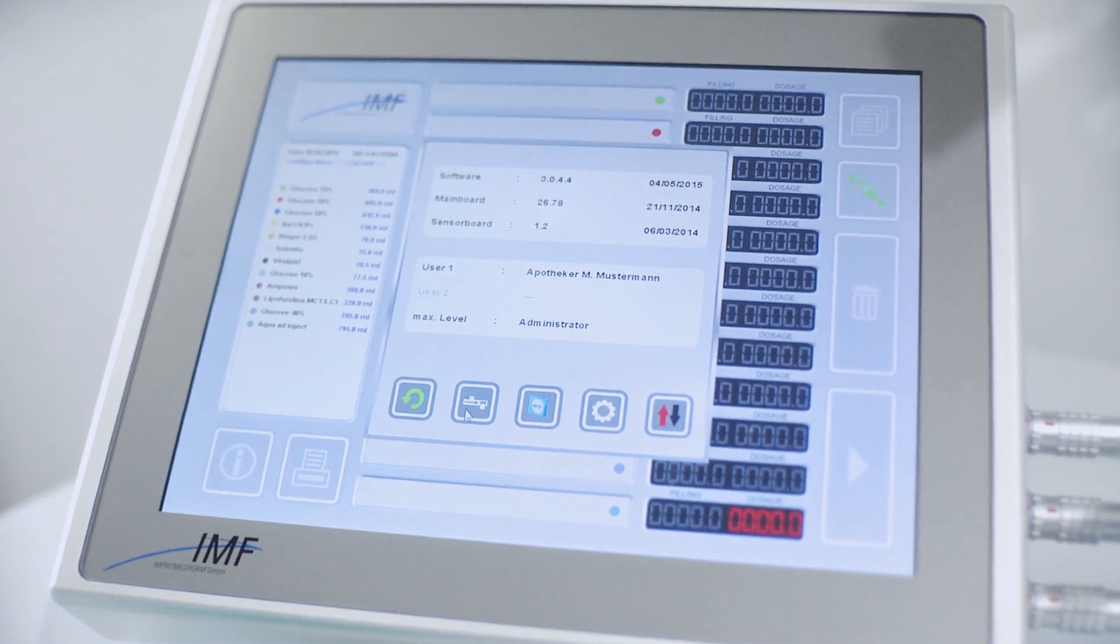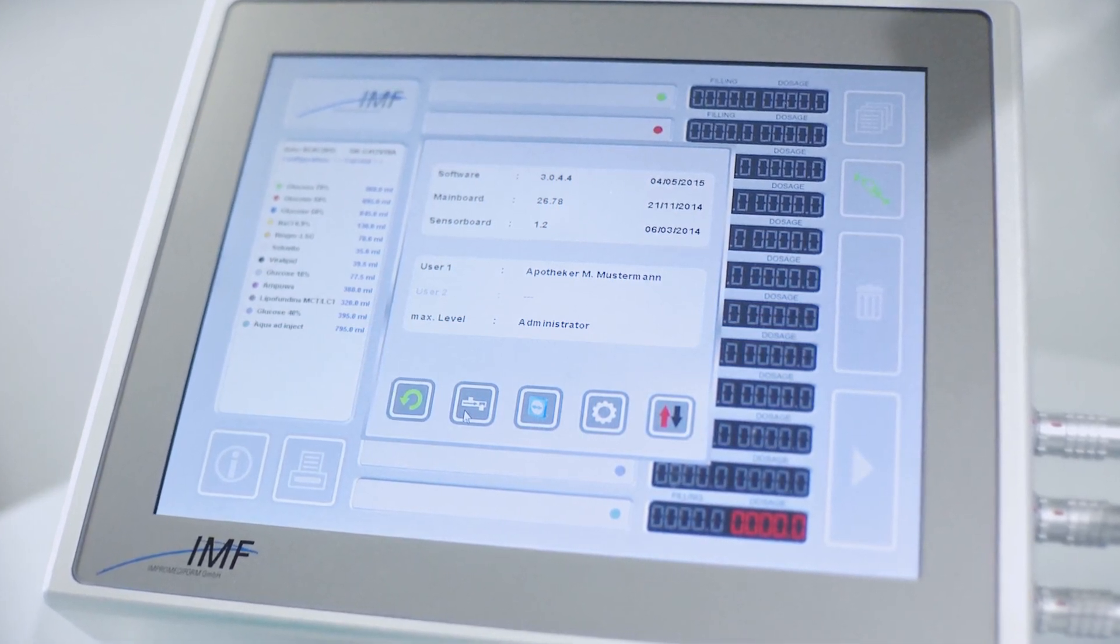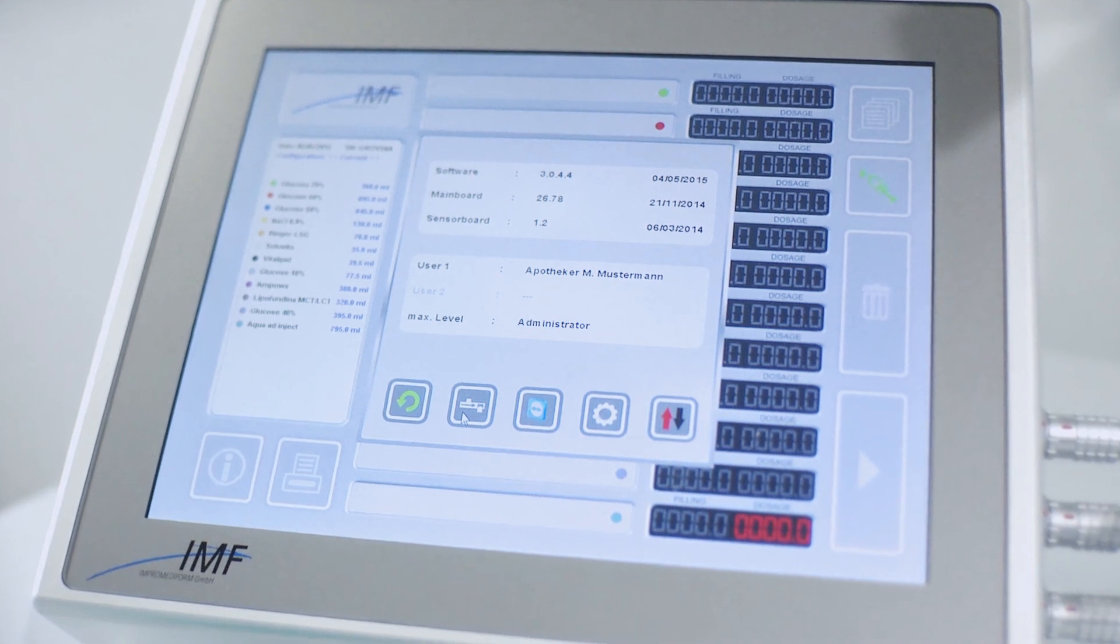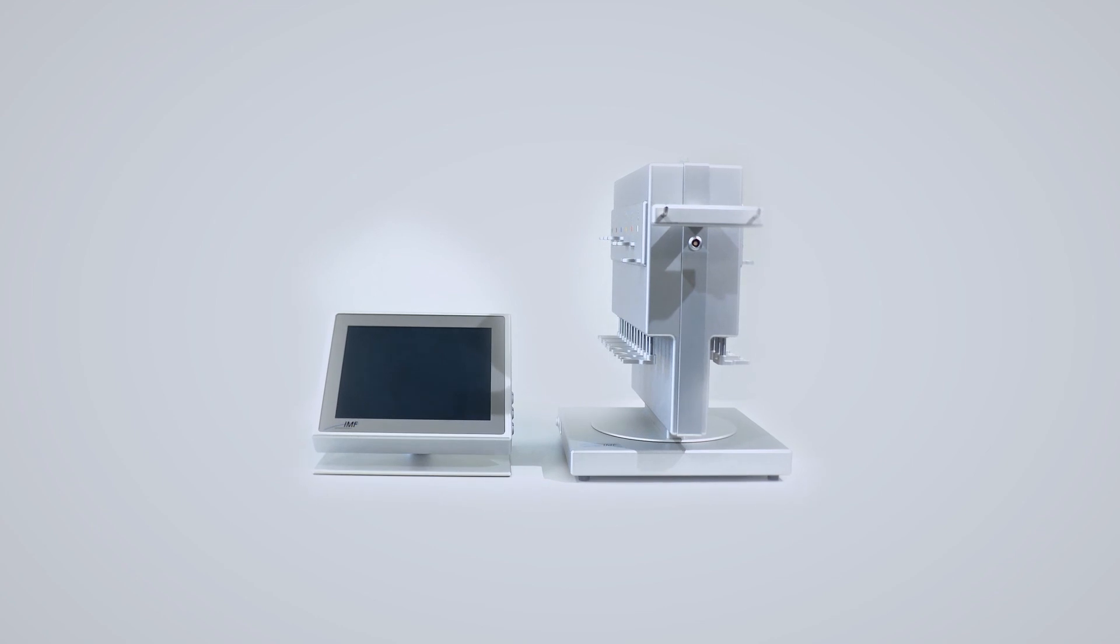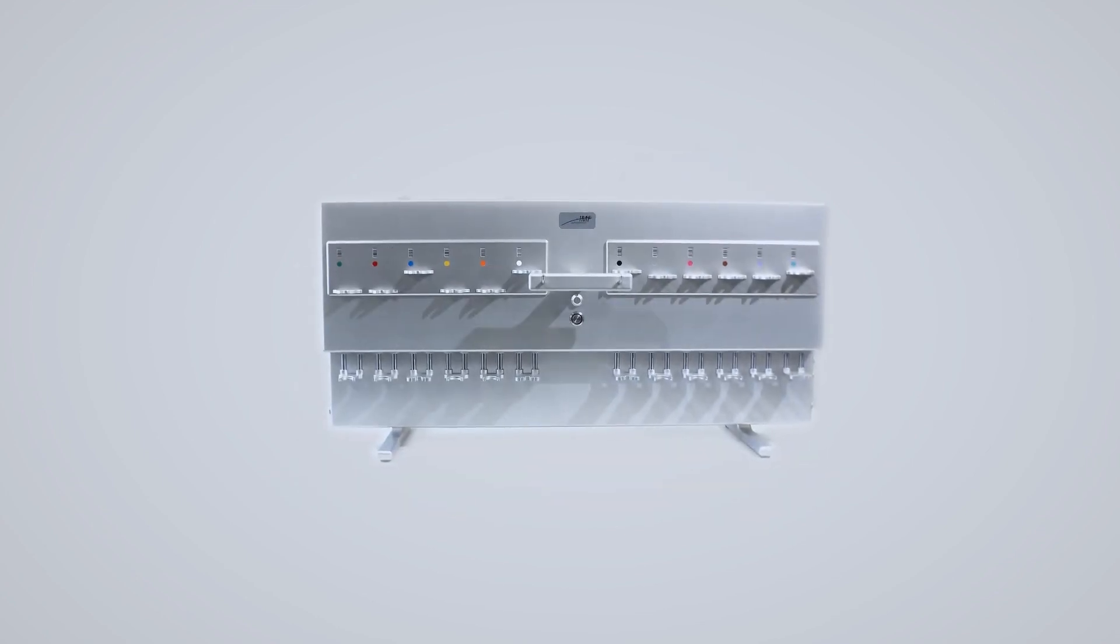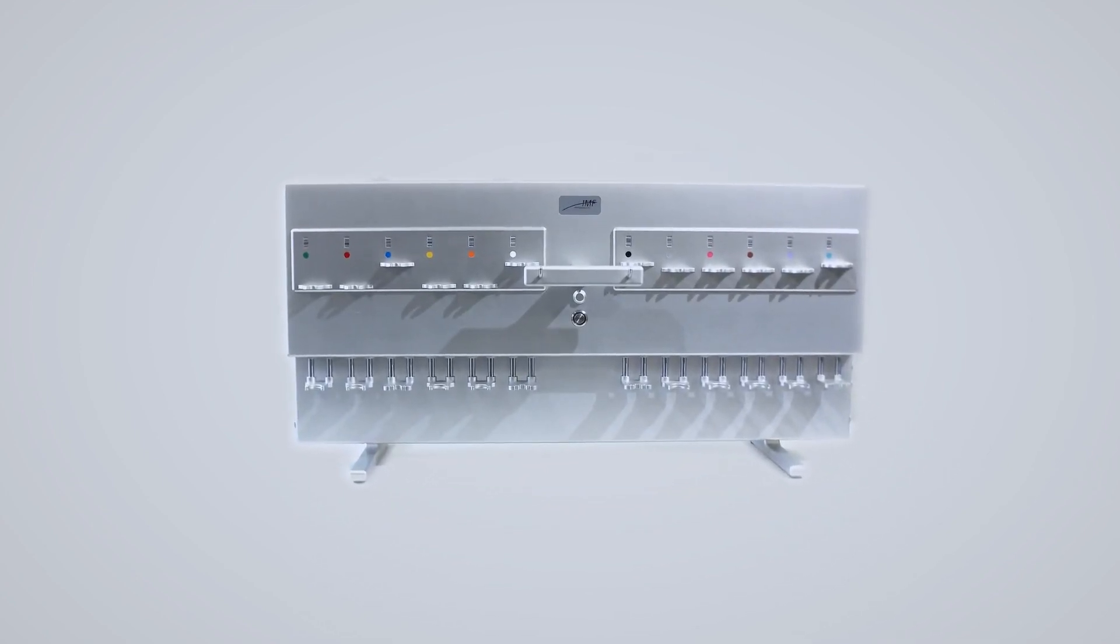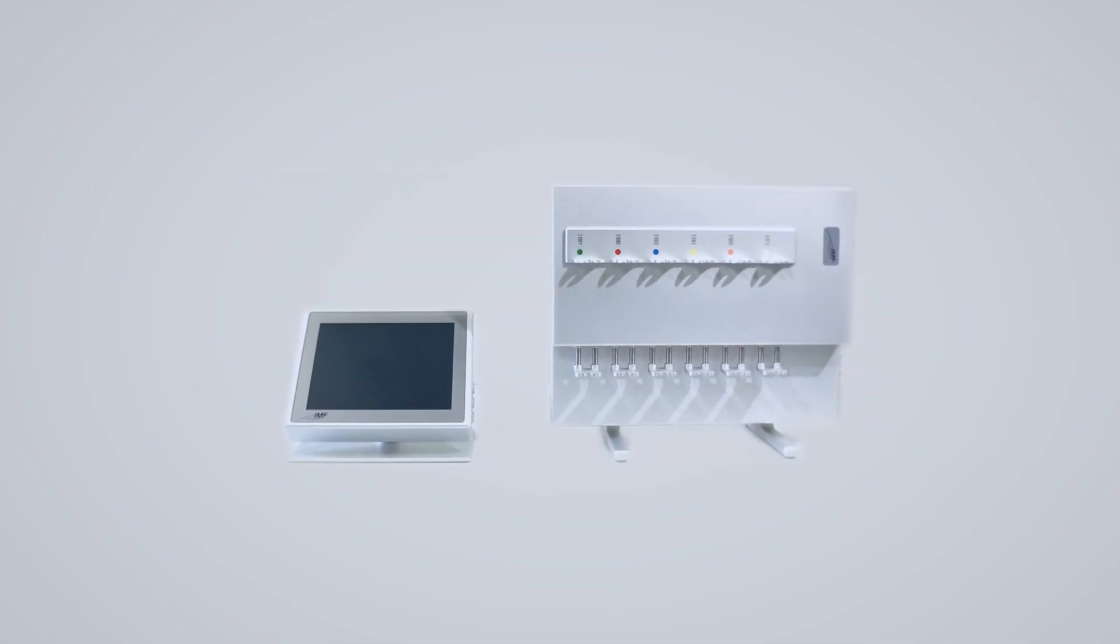ImproMediForm is pleased to offer a huge range of different compounders. Medimix multi-rotatable, 12 channels, ideal for horizontal laminar flow cabinets and small isolators. Medimix multi-standing up, 12 channels, ideal for vertical laminar flow cabinets. Medimix plus, 6 channels, and Medimix mini.